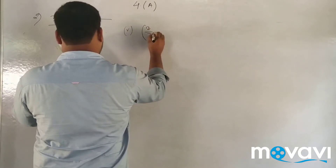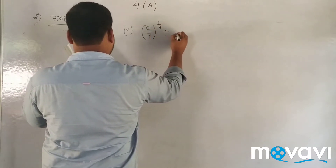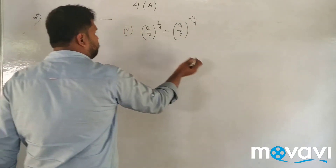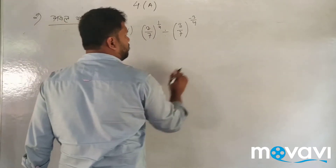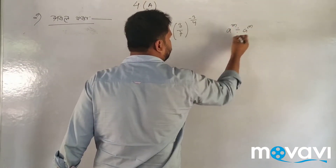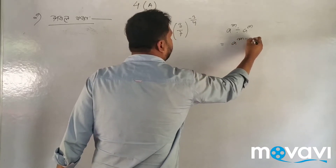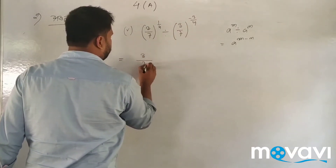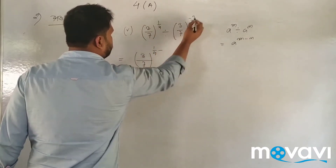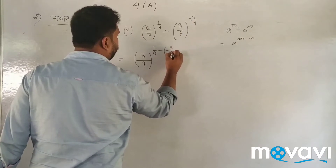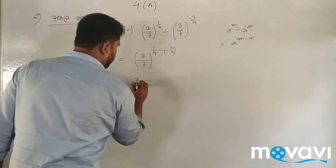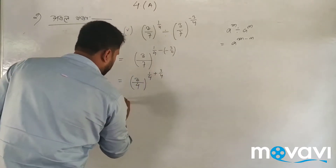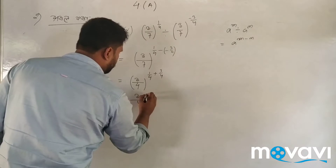Next problem: 3 by 7 to the power 1 by 4, divided by 3 by 7 to the power 3 by 4. Using the division rule, this is 3 by 7 to the power of 1 by 4 minus 3 by 4, which gives 3 by 7 to the power of minus 2 by 4, or minus 1 by 2.